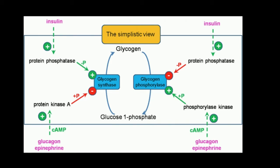Let's talk about glycogen phosphorylase. This is the enzyme that makes glucose 1-phosphate — it depolymerizes glycogen. It turns out that glycogen phosphorylase is active when it's phosphorylated. Glycogen synthase, the other enzyme, is active when it's dephosphorylated. Glycogen phosphorylase is activated when it has a phosphate group attached. This has to be done by a kinase, and the specific name of the kinase is phosphorylase kinase, also called glycogen phosphorylase kinase.